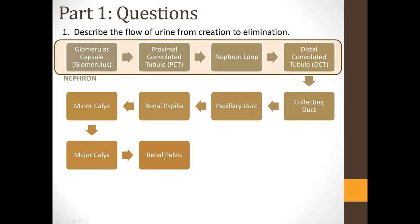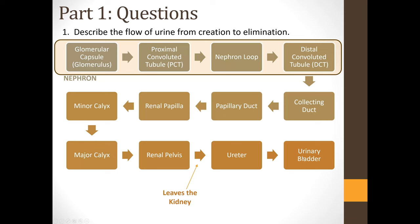At this point, the urine is leaving the kidney — all structures up to this point were inside the kidney. The ureter carries the urine to the urinary bladder, which stores the urine until you're ready to eliminate it. It then passes through the urethra to the exterior of the body.